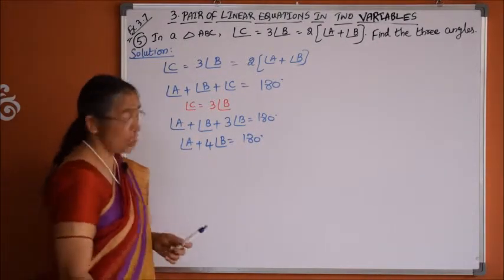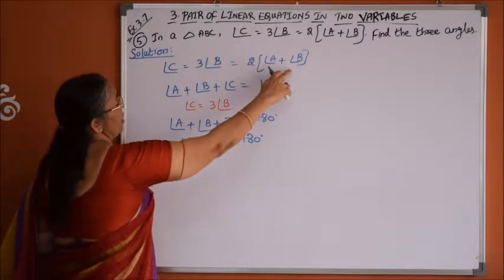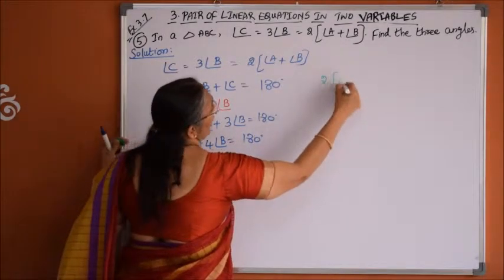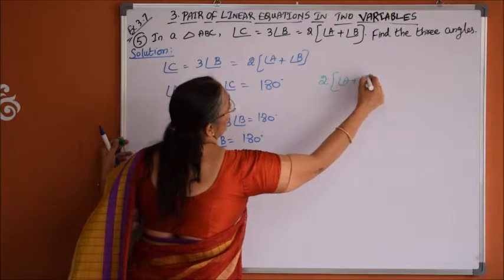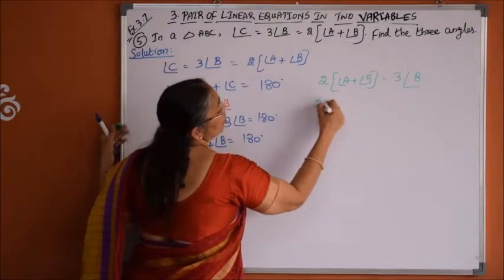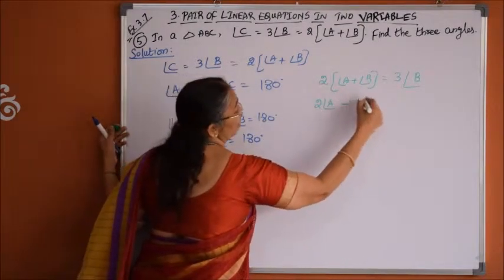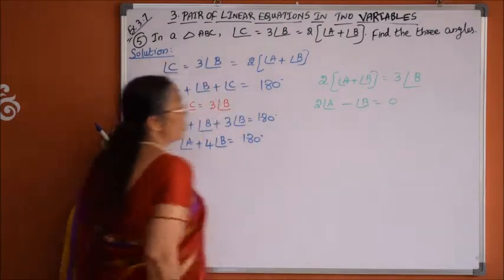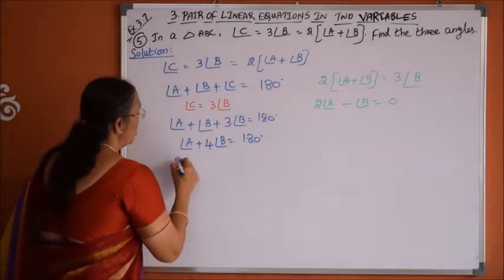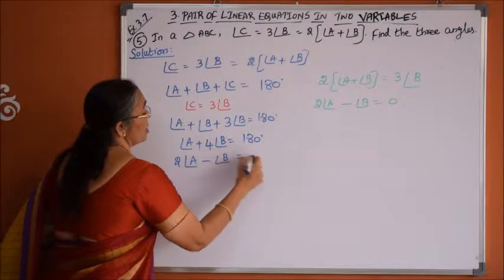Now let us form the second equation. It is already given that 2 times of angle A plus angle B equals 3 times of angle B. That gives us 2 times of angle A plus angle B minus 3 times of angle B equals 0, which simplifies to 2A minus B is equal to 0. So the second equation is 2A minus B equals 0.